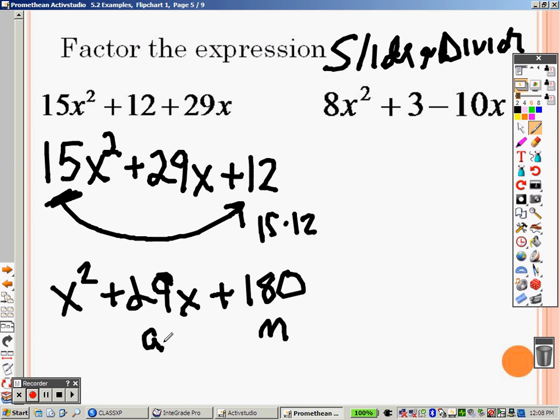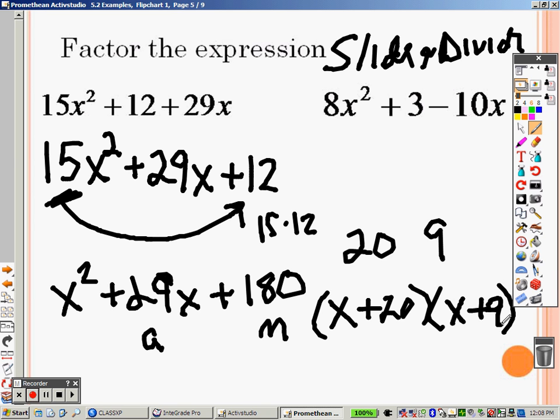Alright. So the only thing that comes to mind for me that works is 20 and 9. Because 20 times 9 is 180, 20 plus 9 is 29, which means I factor this into x plus 20 and x plus 9. So we have x plus 20 and x plus 9, but here's the problem.